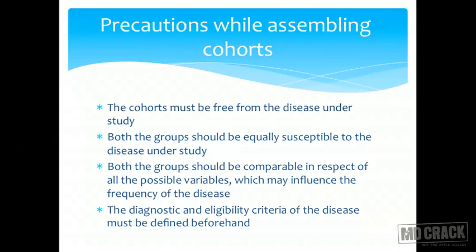Precautions while assembling cohorts: first, the cohorts must be free from the disease under study — if a person already has the disease, there is nothing to determine. Second, both groups should be equally susceptible to the disease under study. If the control group is not susceptible to the disease, your hypothesis will automatically be proved, introducing a very important bias.